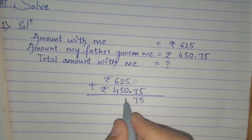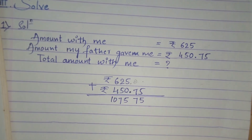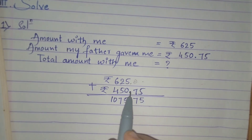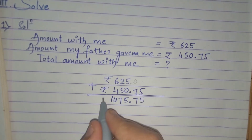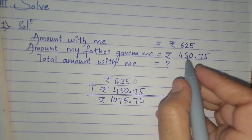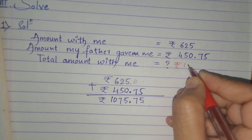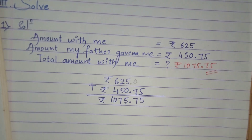5 plus 0 is 5. 2 plus 5 is 7. 6 plus 4 is 10. So now we place the decimal point after 2 digits — here we are having the decimal point after 2 digits. So what is your answer? That is 1,075 rupees 75 paise. So let's write it here — the answer is 1,075 rupees 75 paise.